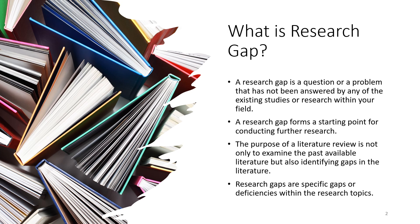You need to understand what are the existing issues that have been discussed, what are the existing results and findings, what are the existing discussions — the recent discussions in the body of knowledge — for you to be able to see what you can do. The purpose of literature review is not only to examine past available literature or studies, but to be able to identify gaps in the literature. You need to see what people have done in this particular area of discipline, and from that understanding, you will be able to see what is yet to be done. A research gap refers to specific gaps or deficiencies within a research topic.